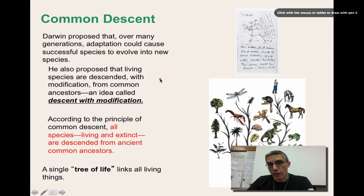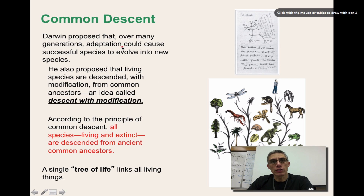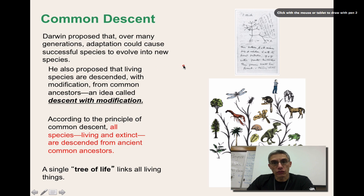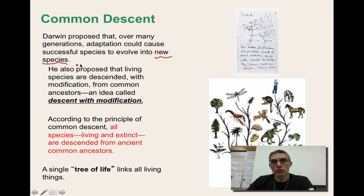The process of natural selection is how we think about evolution occurring. Darwin proposed that over many, many generations, these adaptations would eventually cause new species to evolve from those populations. When you think about a species, you typically think about a group of animals, plants, or organisms in general that can reproduce with each other. But if the changes become so significant that they can't reproduce with each other, that would be the case where we actually have a new species occur.